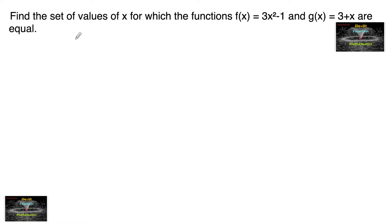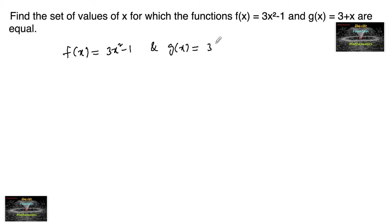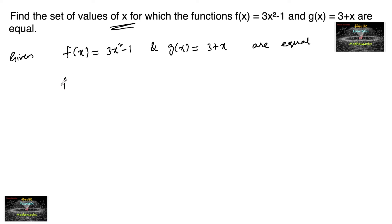Find the set of values of x for which the functions f(x) = 3x² - 1 and g(x) = 3 + x are equal. Two functions are given to be equal, and we need to find the possible values of x such that f(x) = g(x).